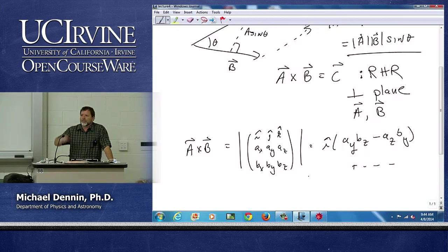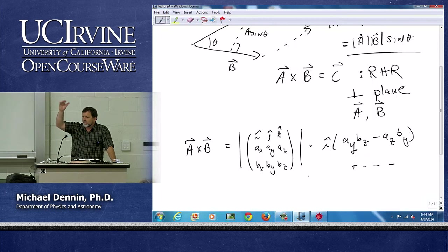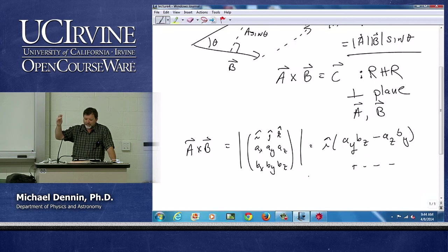Now, I've related so far cross product to area. Cross product to a determinant of a thing that's a little bit strange, because it has a vector as its elements.